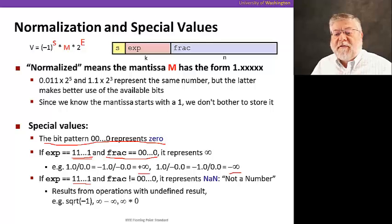Similarly, if the fraction is not zero, we're going to use that to represent not a number. That's still with an exponent of all ones. And not a number is an important value to use for operations that have an undefined result. Things like the square root of minus one, infinity minus infinity, or an infinity times zero. Those are clearly not ones we can come up with a numeric value for. So we're going to reserve these exponents of zero and all ones for this purpose.